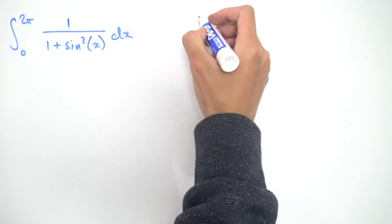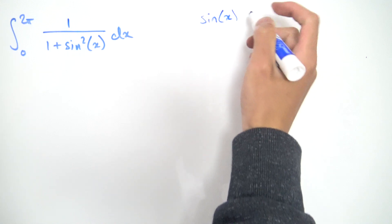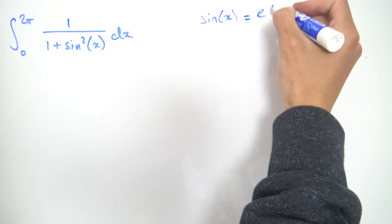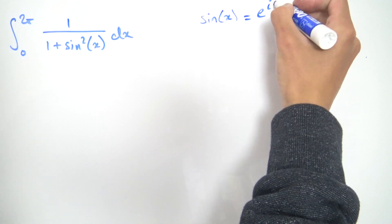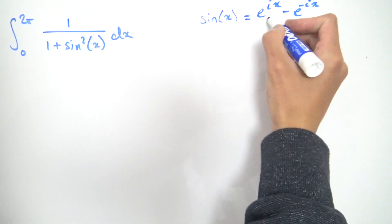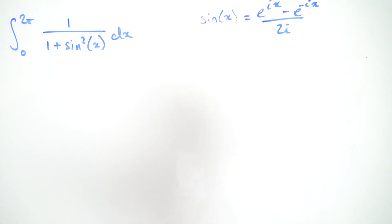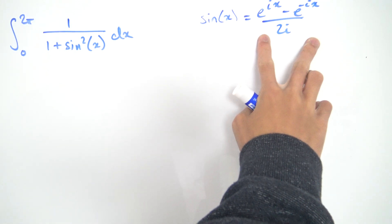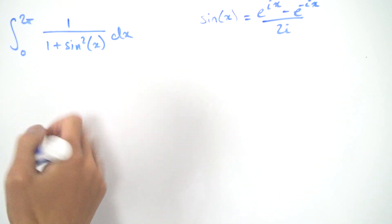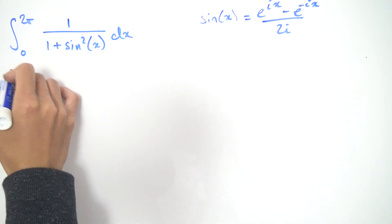Recall that sine of x can be written in terms of complex exponential functions as e to the ix minus e to the minus ix, divided by 2i. So let's plug this exact form for sine of x into this integral and see what we can come up with.